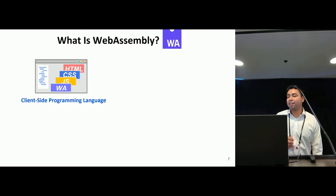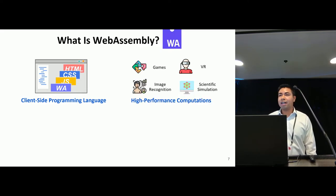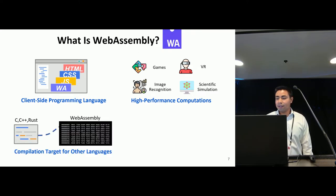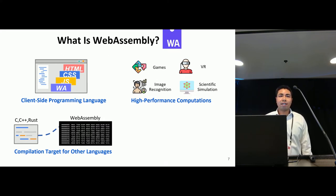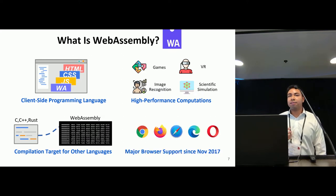For those unfamiliar, WebAssembly is a new client-side web programming language that aims to enable high-performance computations at near-native speeds. The standard defines a bytecode format that serves as a compilation target for compiled languages such as C, C++, and Rust. Since 2017, all of the major browsers have added support for it.